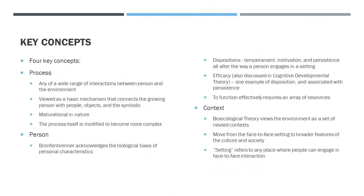Person. Bronfenbrenner acknowledges the biological basis of personal characteristics. He's particularly interested in features of a person that might influence the ways they engage in a setting and how they'll perceive resources or opportunities — but equally important, how they perceive barriers — that the setting might provide. He identified three specific features. First are what he calls demand features: things like age, gender, ethnicity, physical ability or disability, and body types. These can invite or discourage interaction depending on the environment.